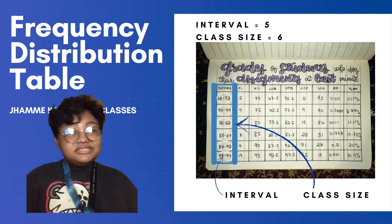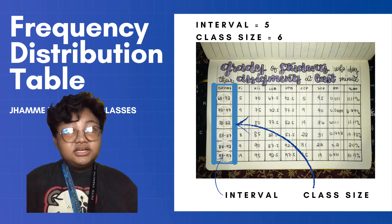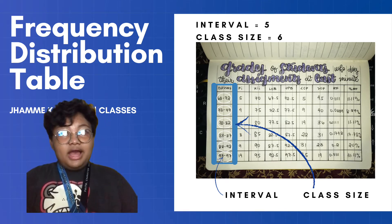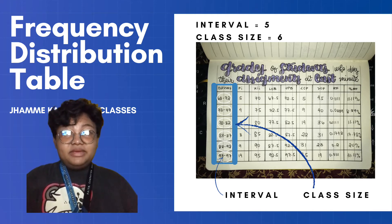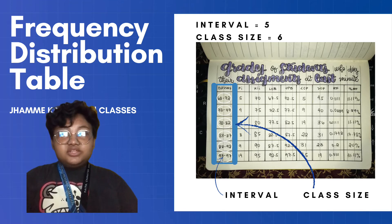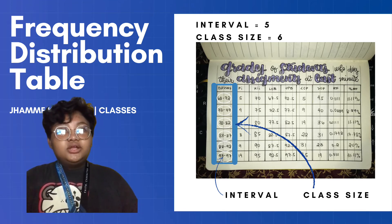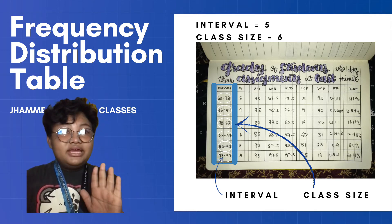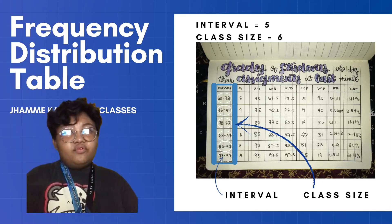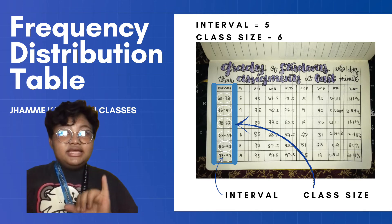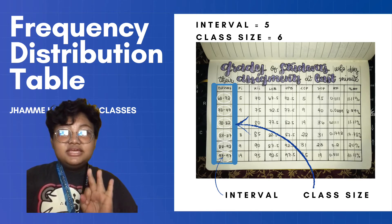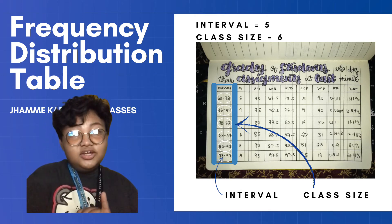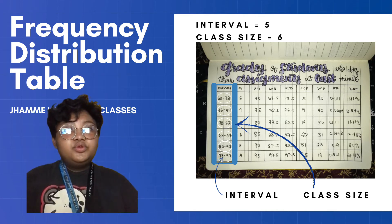The first column in our frequency distribution table is the classes. Classes consist of intervals, so we need the interval first before we can make classes. In gathering the interval, we only need the lowest score, and after that we can count numbers guided by the interval. In our data, the interval is 5 and the lowest score is 68. From 68, we count 5 numbers including 68: 68, 69, 70, 71, 72. That's why our first class is 68 to 72.